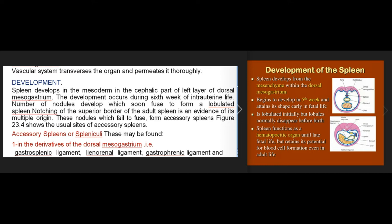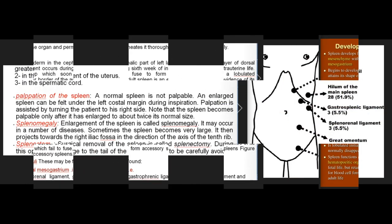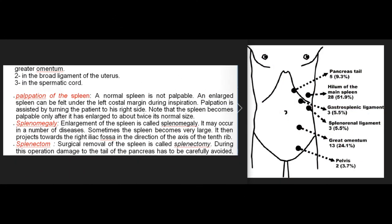Nodules that fail to fuse form accessory spleens (spleniculi). These may be found in derivatives of the dorsal mesogastrium — i.e., the gastrosplenic ligament, lienorenal ligament, gastrophrenic ligament, and greater omentum — as well as in the broad ligament of the uterus and in the spermatic cord.